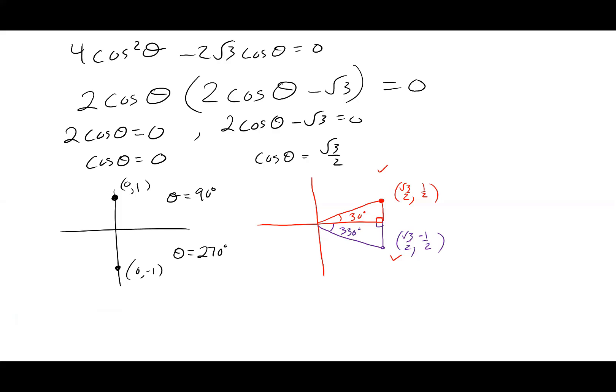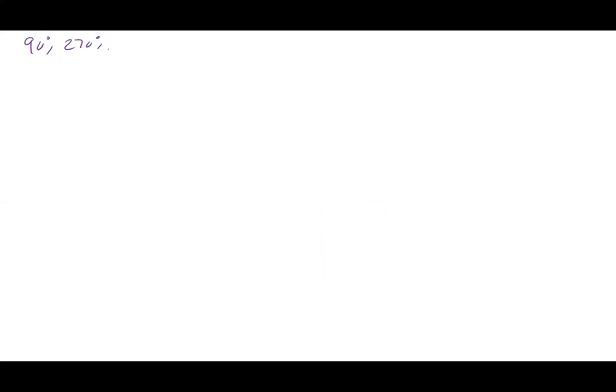So we have 90, 270, 30, and 330. But since we squared both sides, we have to go back and check. I have to check 90 degrees, 270 degrees, 30 degrees, and 330. Let's go for it — back to the original problem.